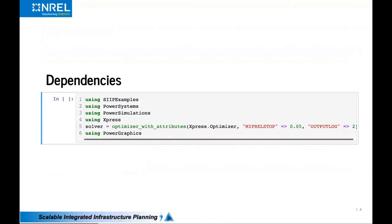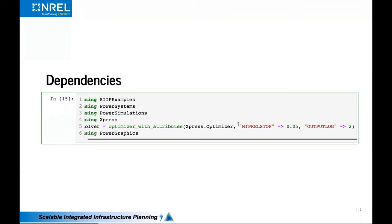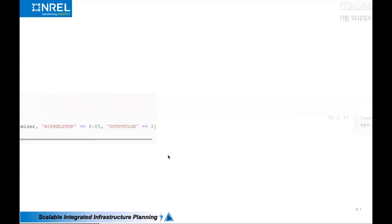Running this live, there are a few dependencies: an examples repository that sets up some paths and has nice examples for various capabilities. There's PowerSystems, which is our data specification; PowerSimulations, which is the modeling specification; Xpress, which is just an API to the Xpress MP solver set up with a MIP solver at a relatively relaxed tolerance for speed.